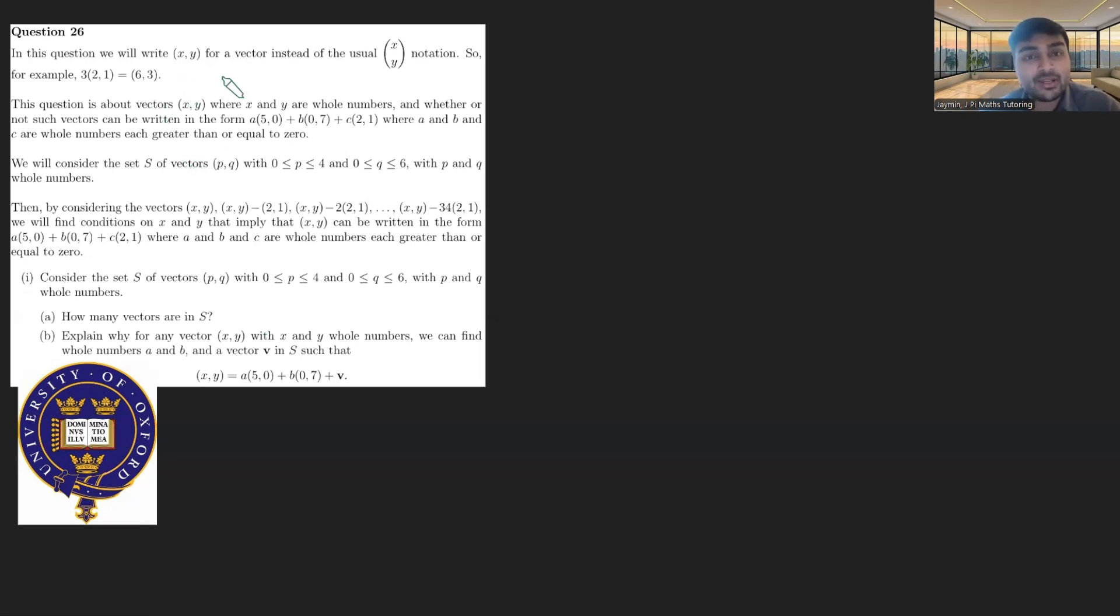In this question, we will write xy for a vector instead of the usual xy notation. So, for example, three times (2,1) just means (6,3). This question is about vectors xy where x and y are whole numbers and whether or not such vectors can be written in the form a times (5,0) plus b times (0,7) plus c times (2,1).